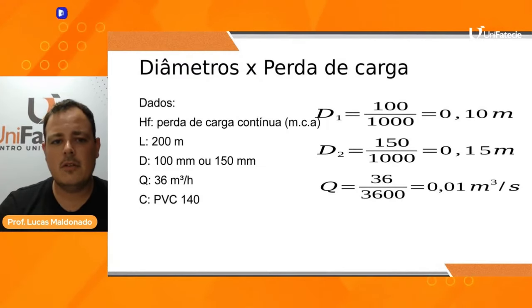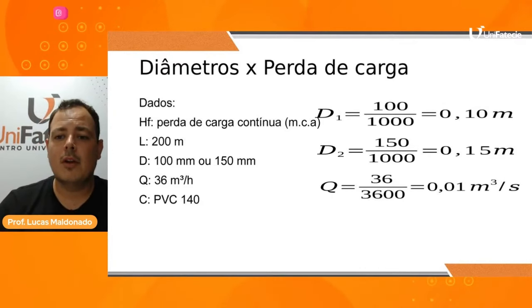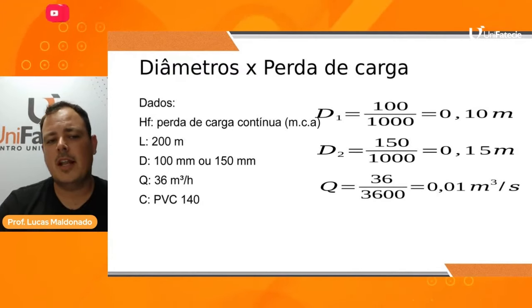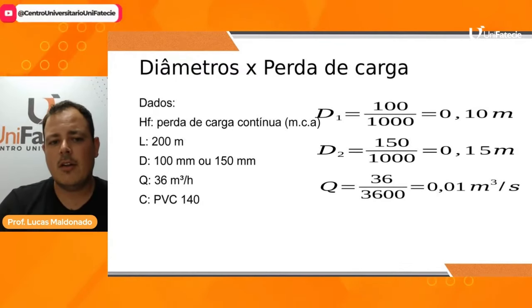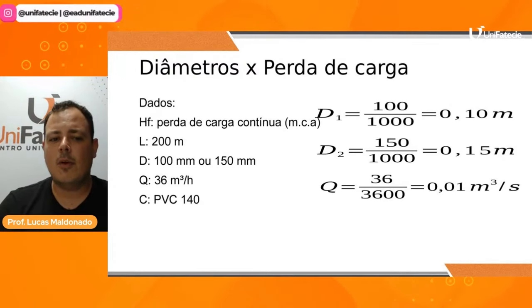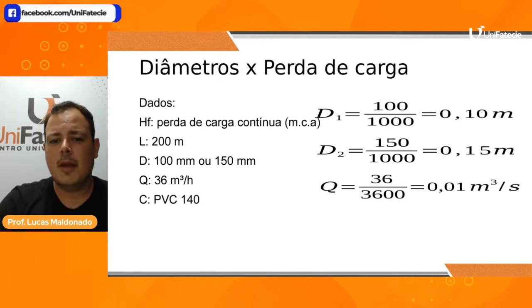Vamos utilizar o L de 200 metros, o comprimento da minha tubulação. O meu diâmetro, nós vamos avaliar dois diâmetros: o diâmetro de 100 milímetros e o de 150 milímetros. Para converter de milímetro para metro, basta dividir por mil. 100 milímetros dividido por mil dá 0,10 metros. E 150 dividido por mil, 0,15 metros. Uma conta bem simples.